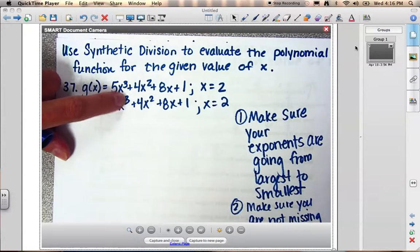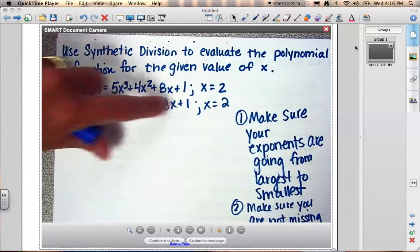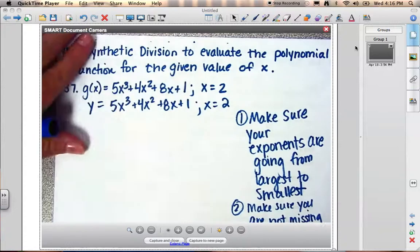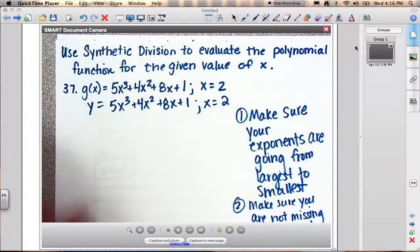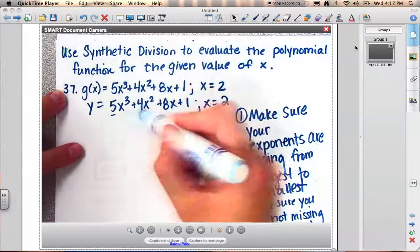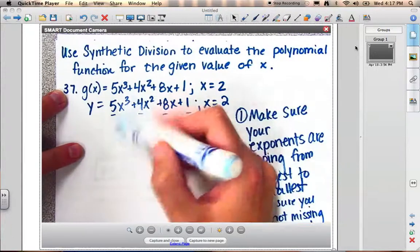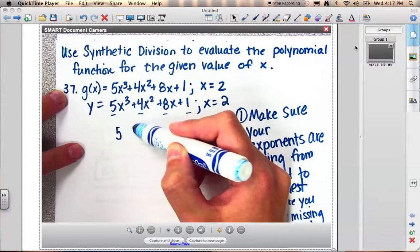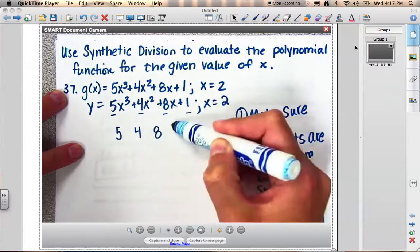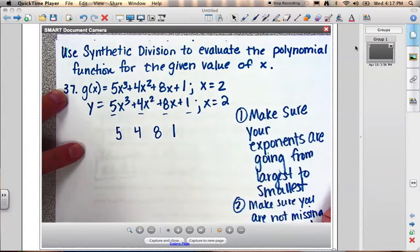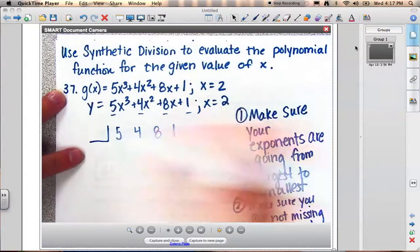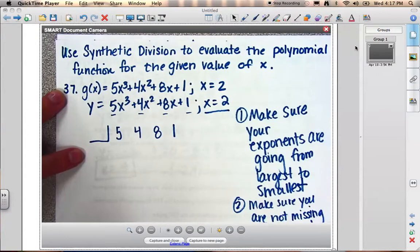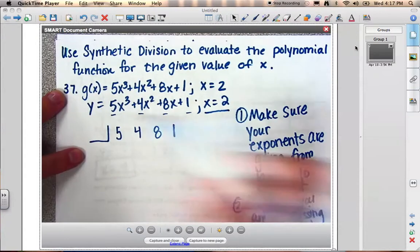But when I start at 3, I have all the numbers underneath 3, so I'm good with this one. So once again, here's the process. I'm going to rewrite just these numbers in a straight line. 5, 4, 8, 1. In the backwards L, I'm going to put the value that I'm evaluating at. So I'm going to put a 2.